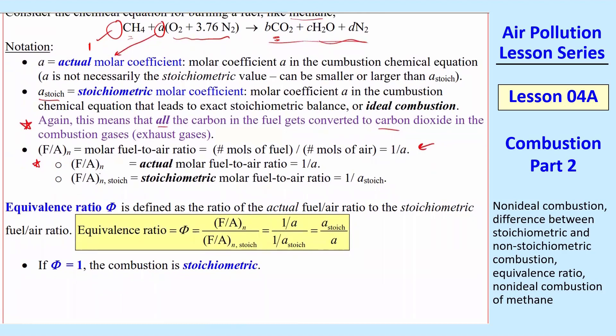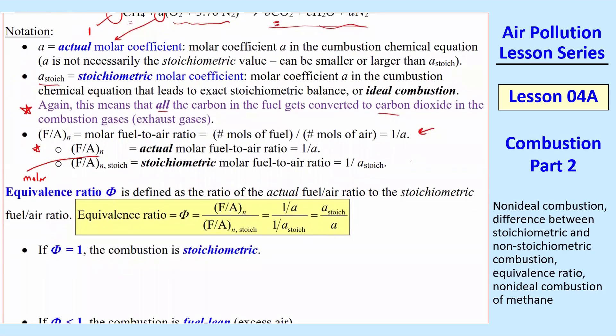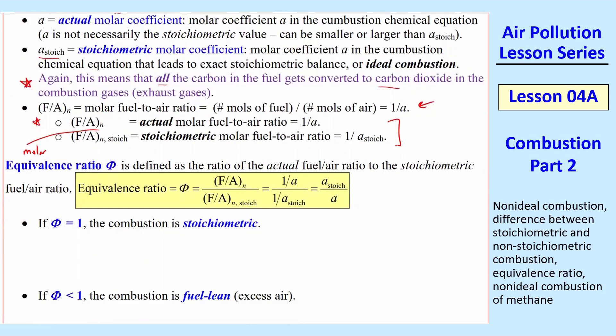And I put a little subscript N, and that just means molar, because you can also do fuel-to-air ratio by mass if you wanted. We're doing it by moles. So it's a molar fuel-to-air ratio. The stoichiometric value is 1 over A when A is A stoic.